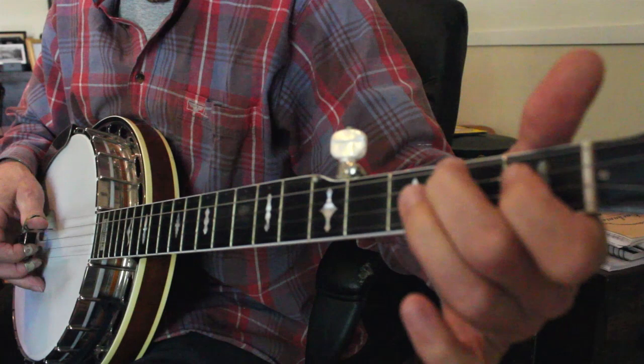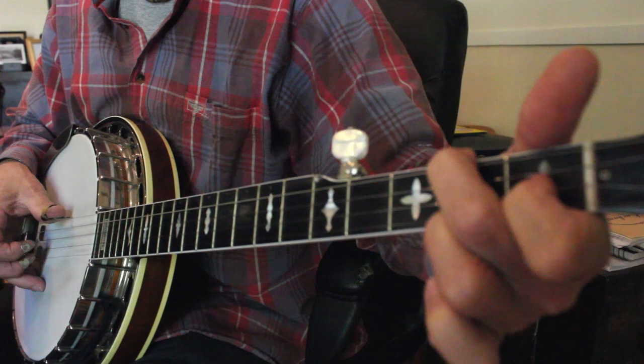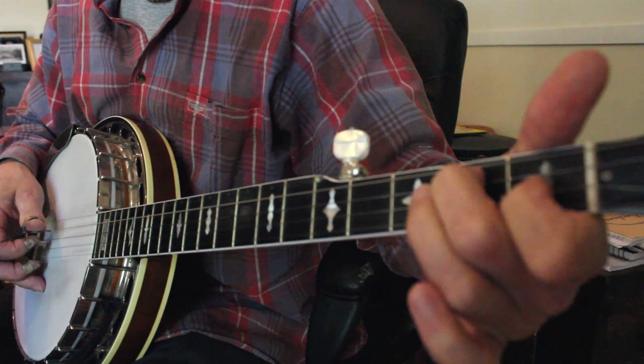To do this, try this exercise of doing two bars of your basic rolls over each of the G, C and D seventh chords. That is two bars of G, the open chord,